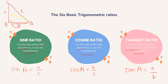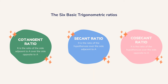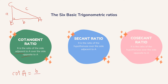For the next ratios, it is just the reciprocal of the three that we have right now. So now we have our cotangent, secant, and cosecant ratio. Let me draw again our triangle. We have triangle big A, B, and C, and for the sides we have small a, small b, and small c. The cotangent ratio is the ratio of the side adjacent to A over the side opposite to A. The one beside A is b, so cotangent A is equal to b over a.